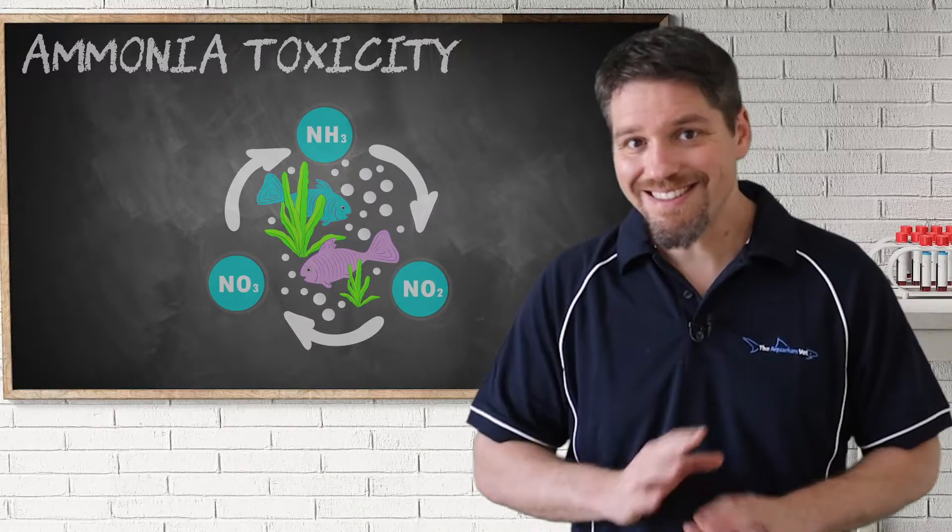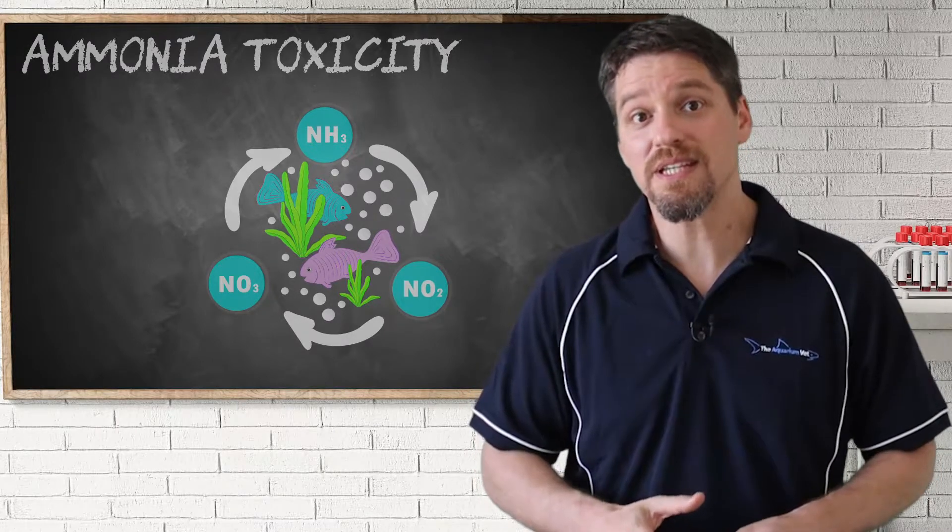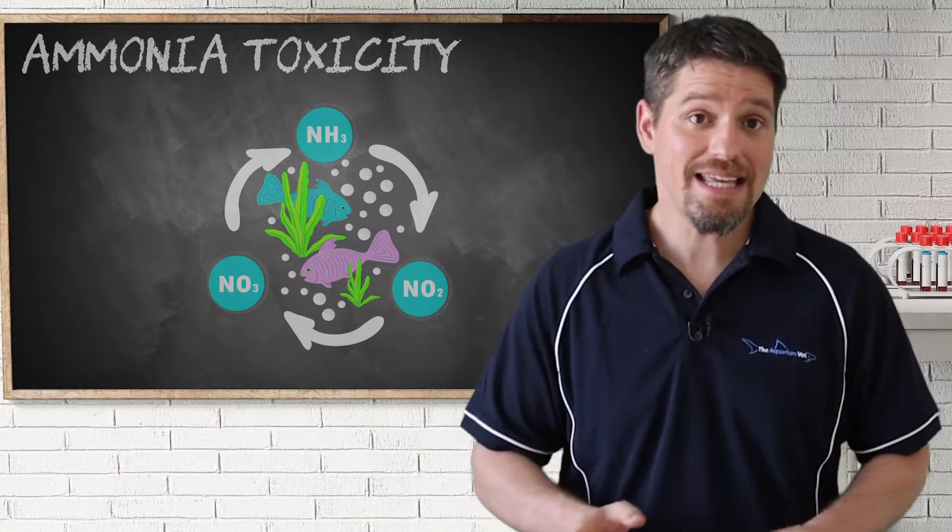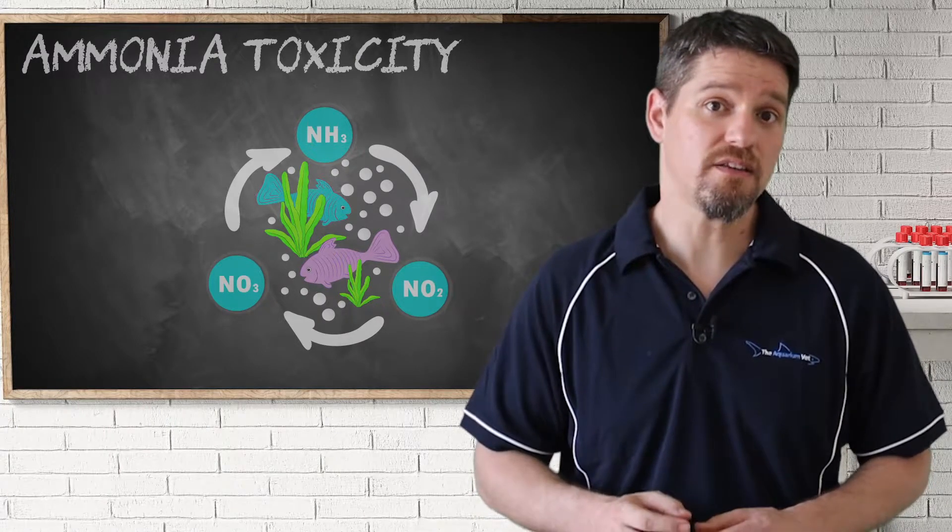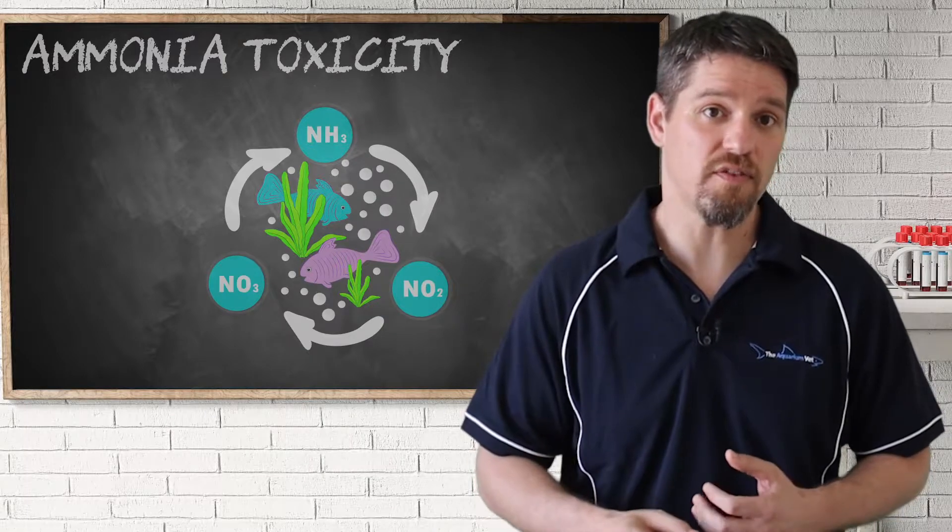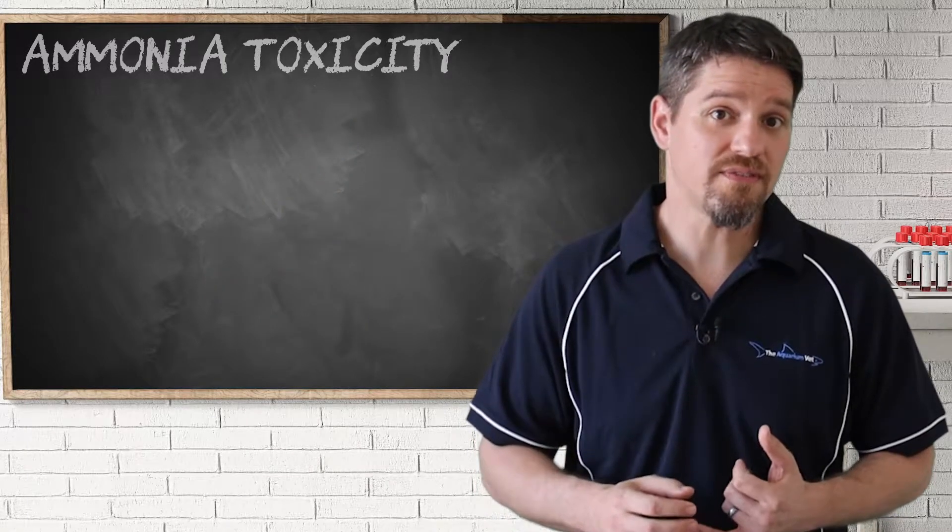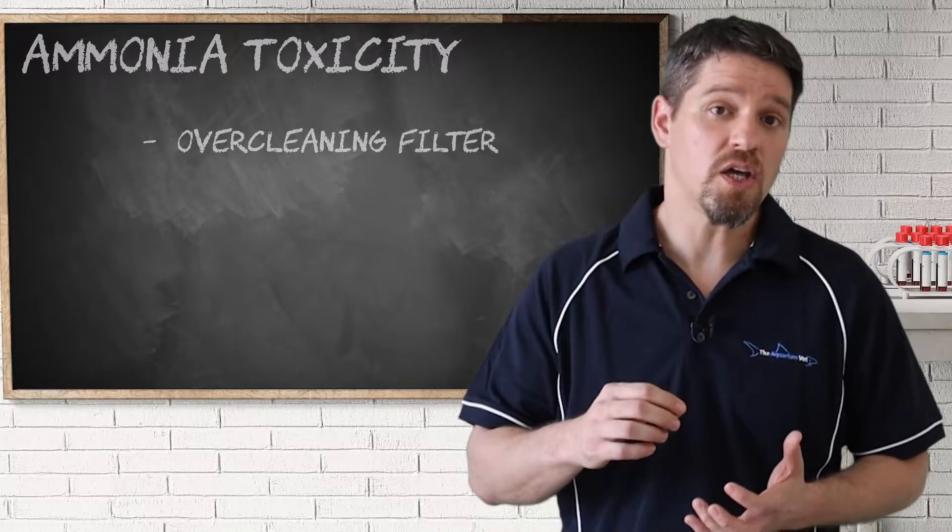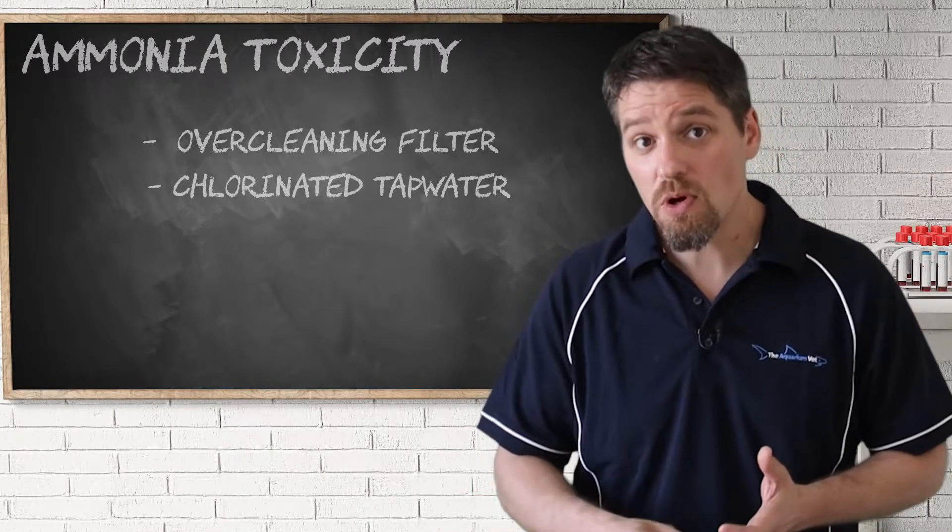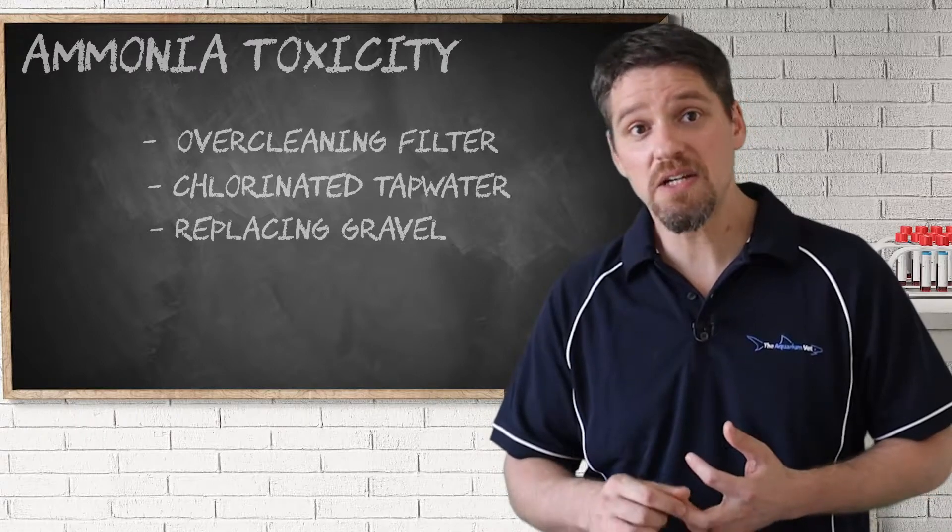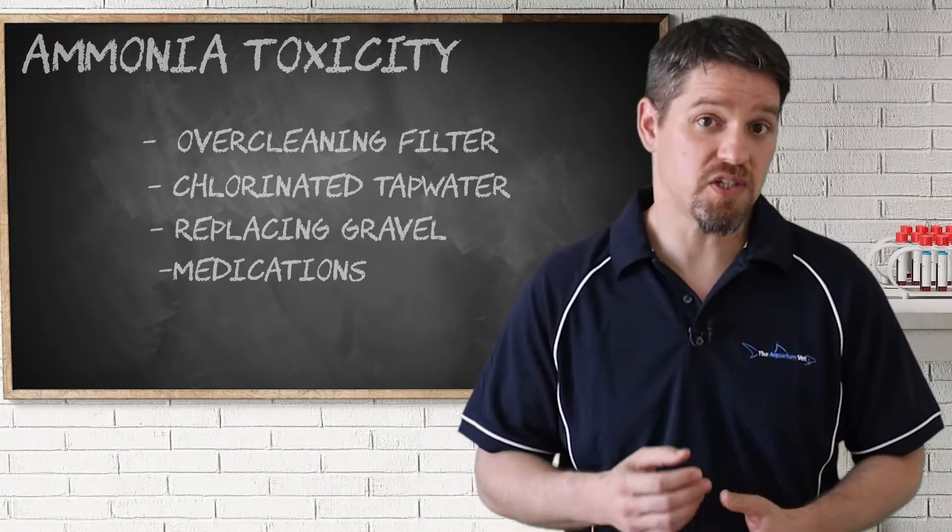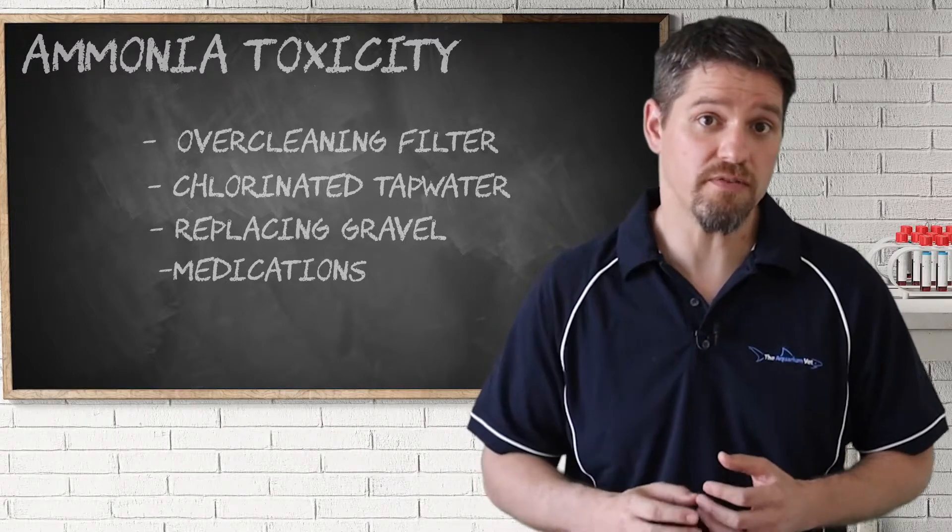Ammonia toxicity is not just a problem with new aquariums, it is something that we can see even in well-established aquariums. Anything that kills that beneficial bacteria in the filter can lead to increased levels of ammonia. Some examples of that in a mature aquarium can include overcleaning the filter, using untreated chlorinated tap water to clean the filter, replacing or cleaning the gravel or substrate in the aquarium, or adding medications such as antibiotics will also kill off that beneficial bacteria.